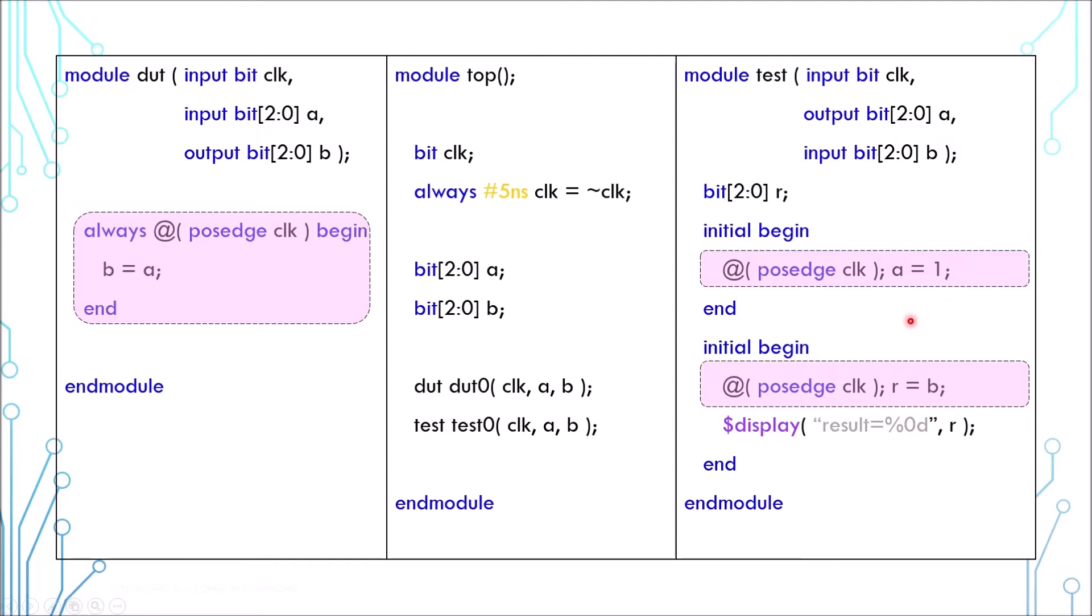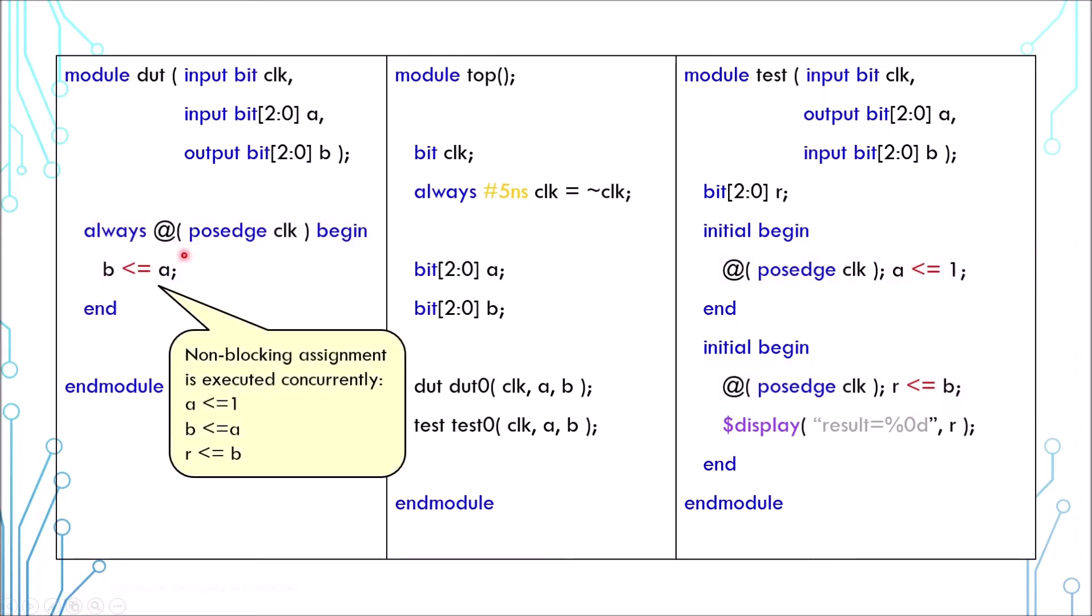This is why to model data transfer between components, it is recommended to use non-blocking assignments because they are performed concurrently. A is assigned to 1, and at the same time B is assigned to A right before A changes to a new value. R is assigned to B right before B changes to a new value. This is a more accurate modeling.